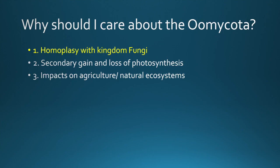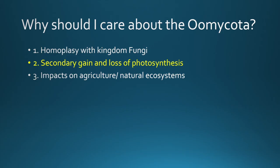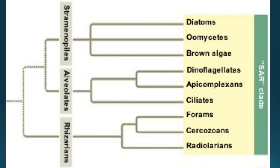So why should you care about oomycetes? The similarity to true fungi is one interesting reason why students of evolution and biodiversity should learn about the oomycetes. Another reason is that other stramenopiles we've studied include the brown algae and the diatoms. Both of these clades are important photosynthesizers. Oomycetes are heterotrophs, but they are descended from organisms that could photosynthesize. Many eukaryotes have the ability to photosynthesize by primary or secondary endosymbiosis, but few have opted to revert to a heterotrophic niche.